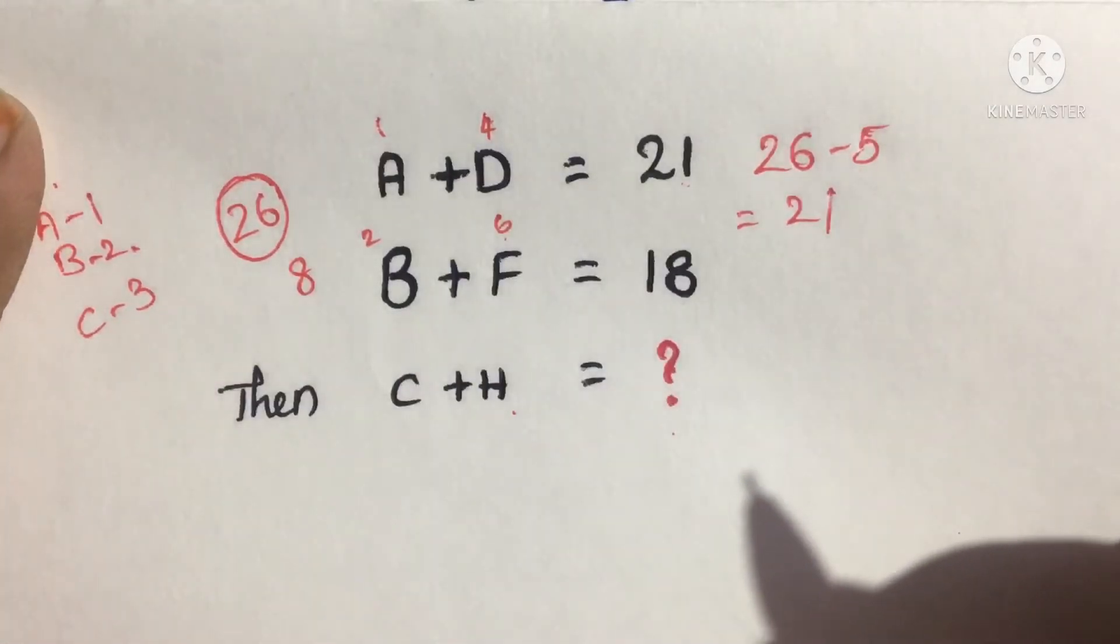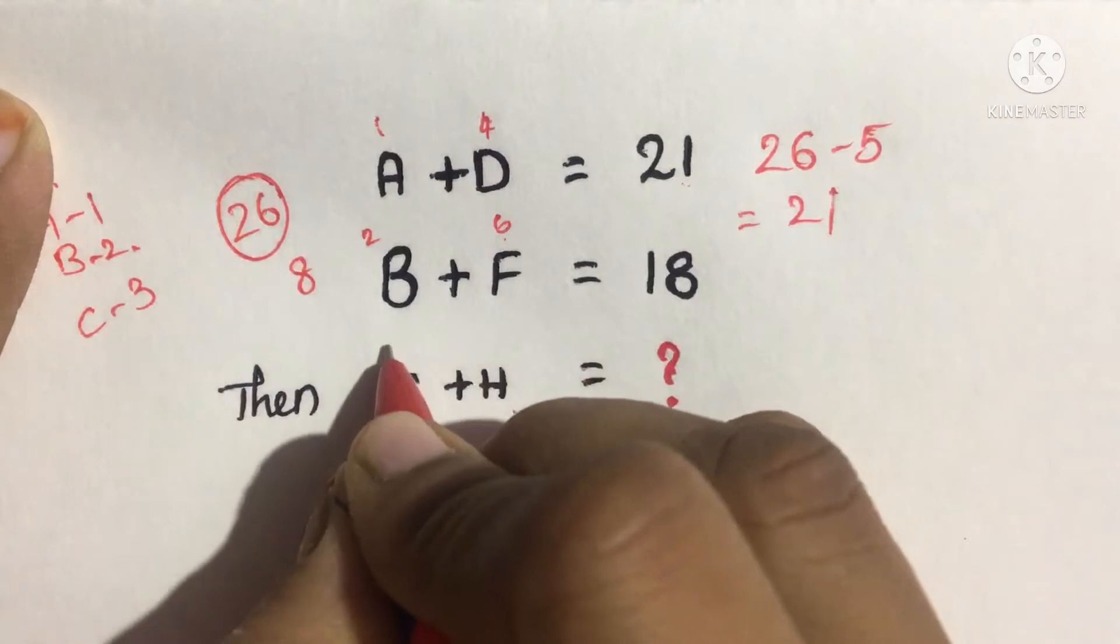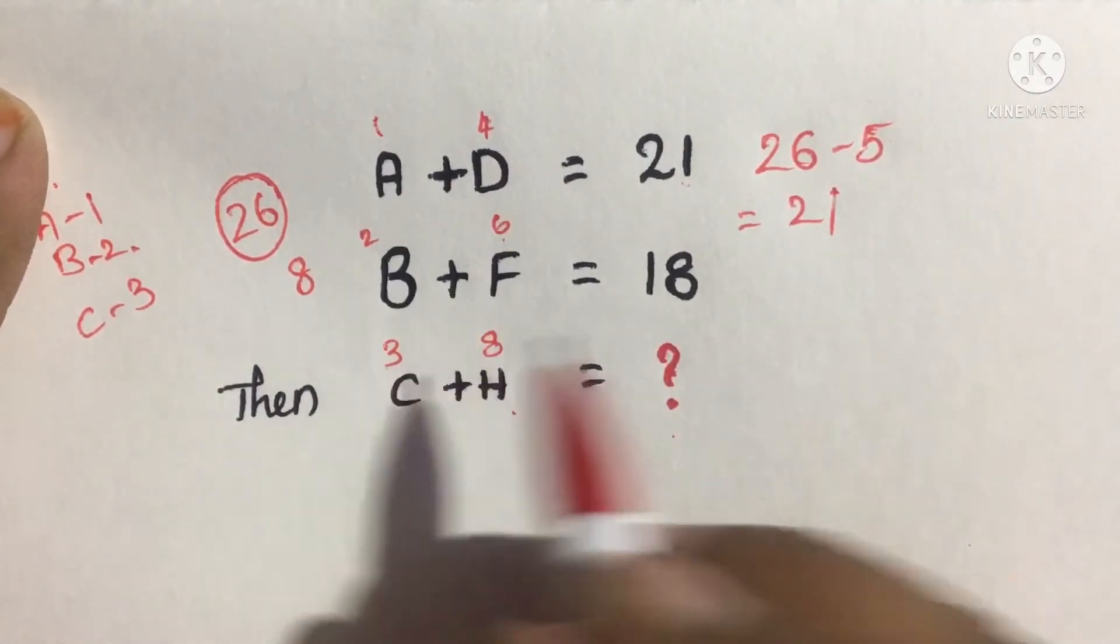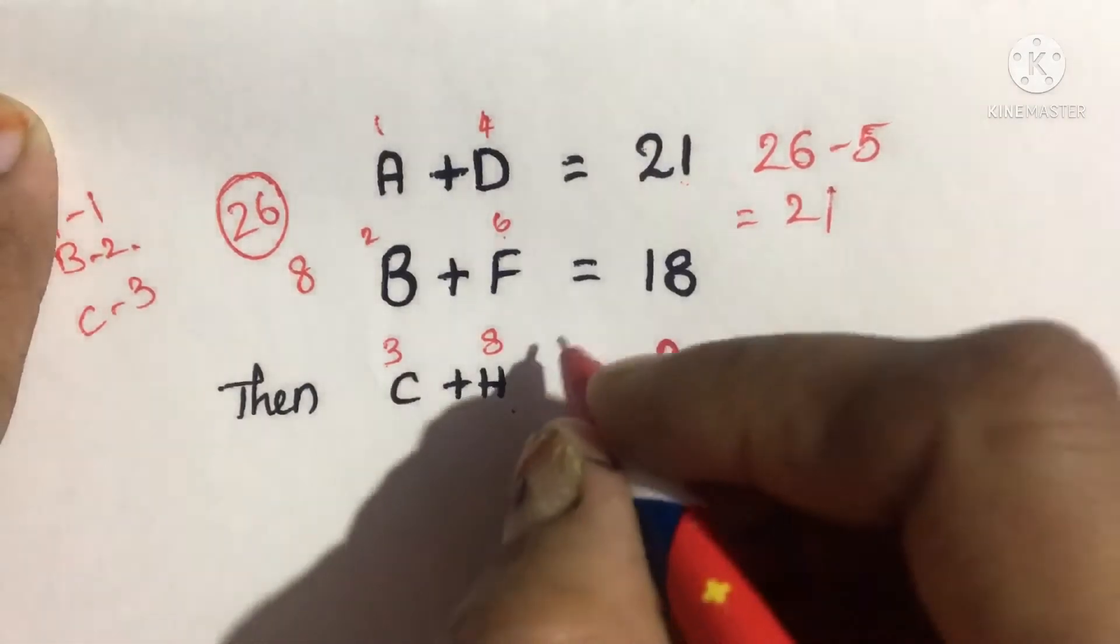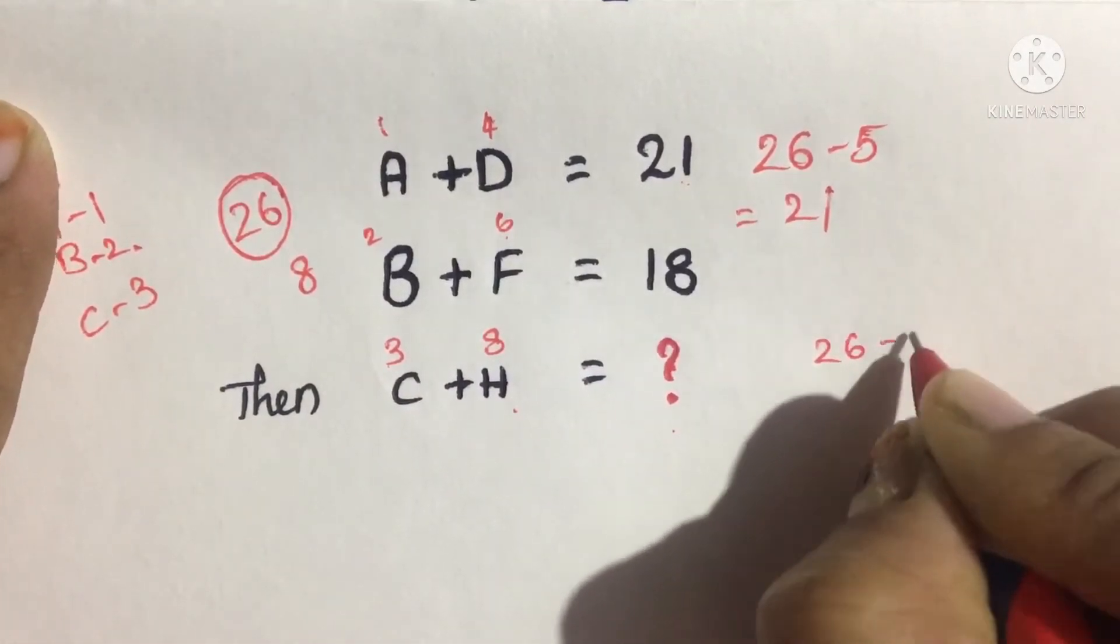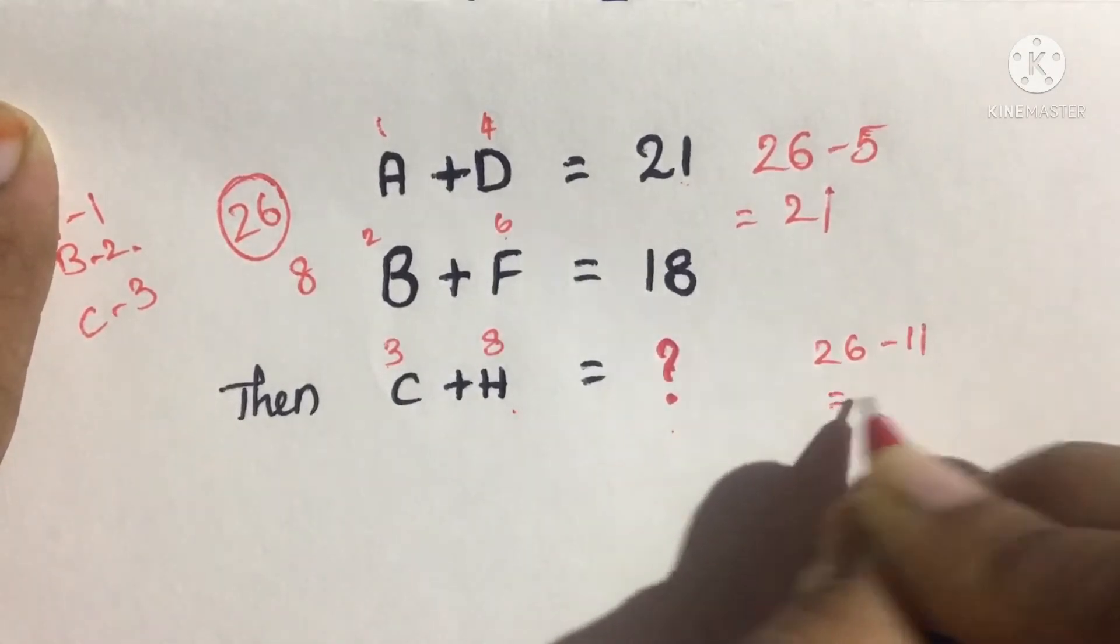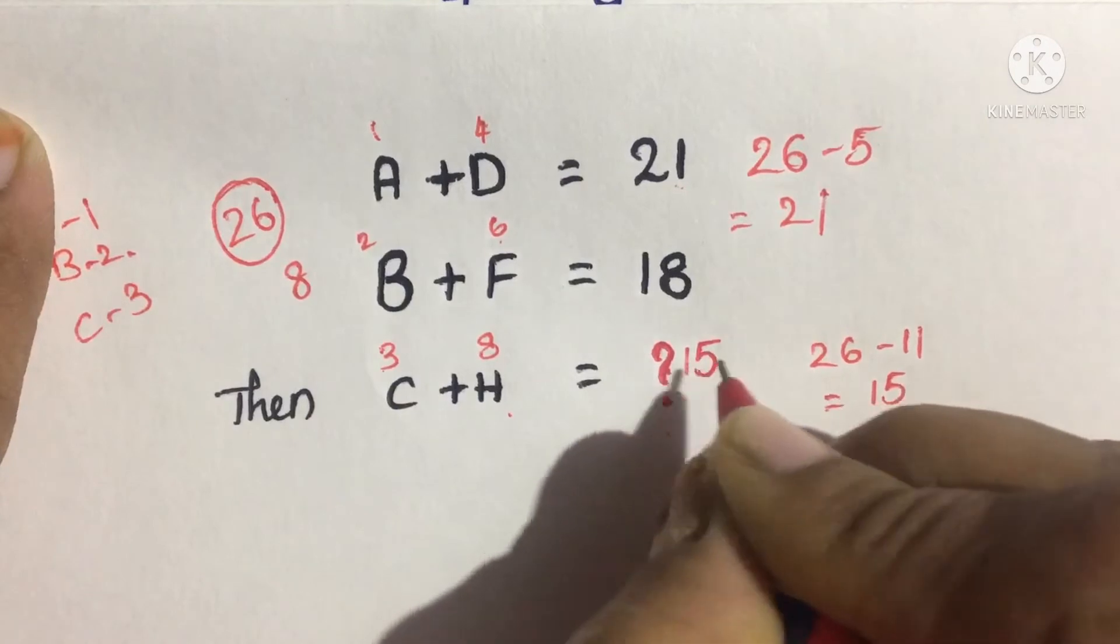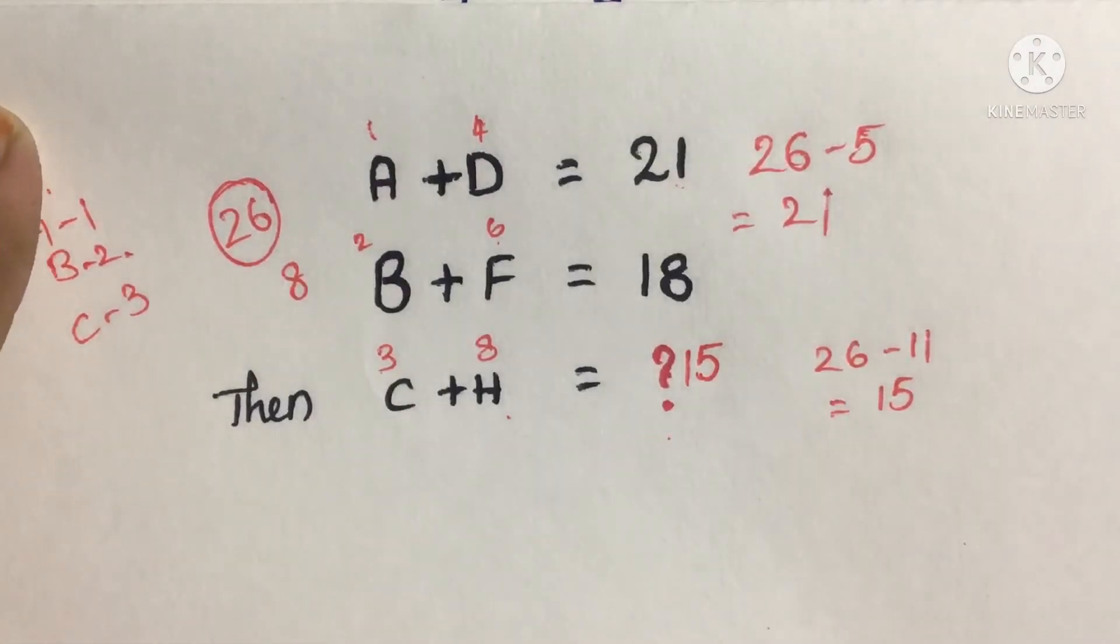Similarly, B is 2, F is 6, so 6 plus 2 is 8. 26 minus 8 equals 18. Likewise, C equals 3, H equals 8, so 8 plus 3 is 11. Therefore 26 minus 11 equals 15. So our solution here is 15.